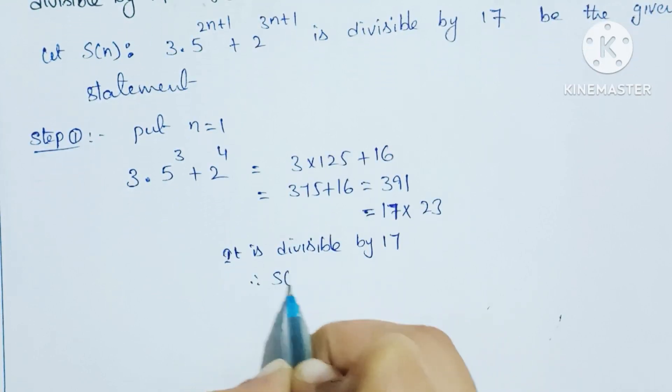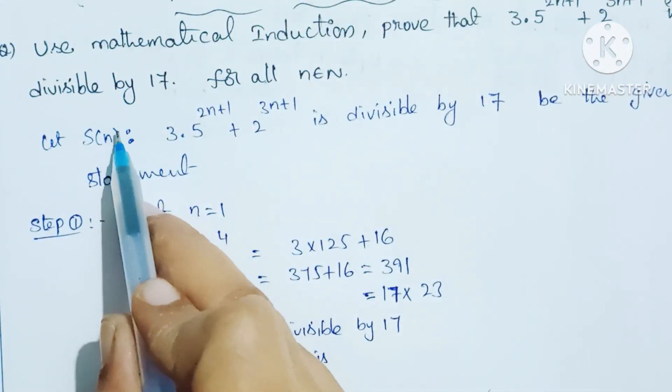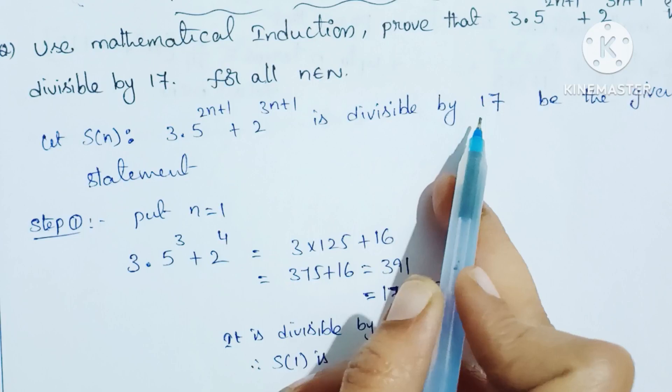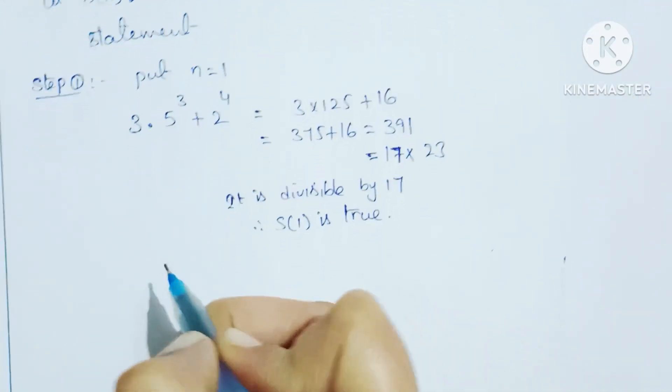Therefore, S of 1 is true. Since n equals 1 gives a result divisible by 17, S(1) is true. Next step 2.